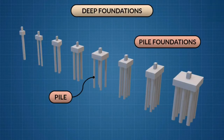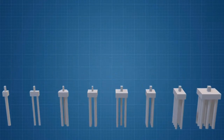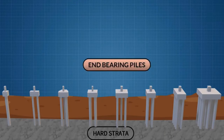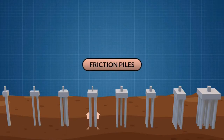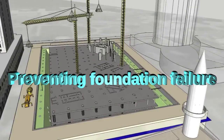Basically, the pile foundation is constructed this way because when there is gravity load on the building and the load tries to push the building down, it should also try to push the foundation down. But when the building tries to go down, there is a fusion of force between the adjacent soil and the foundation, which keeps the foundation in place and in position, therefore preventing the foundation from failing.